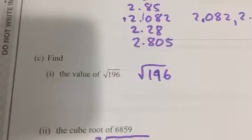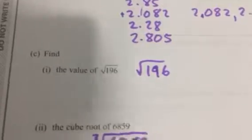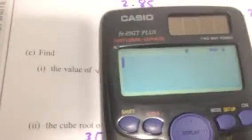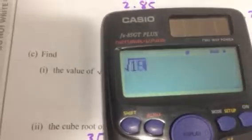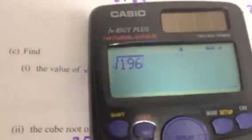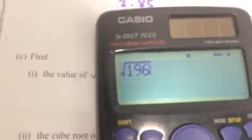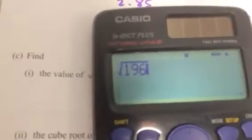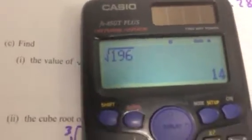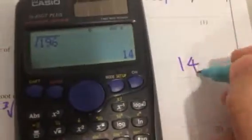Next, I'm asked to work out the value of the square root of 196. It is a calculator paper, so I can just go root 196. Some of you might already know, 12 squared is 144, 13 squared is 169, 14 squared is 196. So that there is 14.